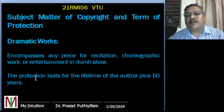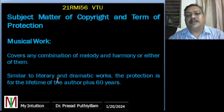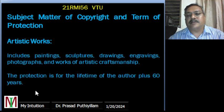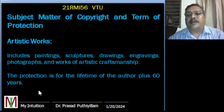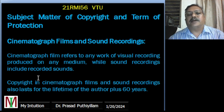Dramatic works — such as pieces of recitation, choreographic works, or entertainment in a show — are protected for the lifetime of the author plus 60 years. Musical works, covering any combination of melody and harmony or either of them, similarly receive protection for the lifetime of the author plus 60 years. Artistic works — including paintings, sculptures, drawings, engravings, photographs, and works of artistic craftsmanship — also receive protection for the lifetime of the author plus 60 years.